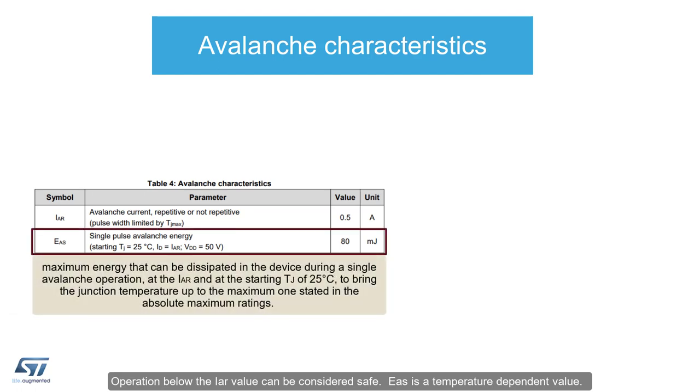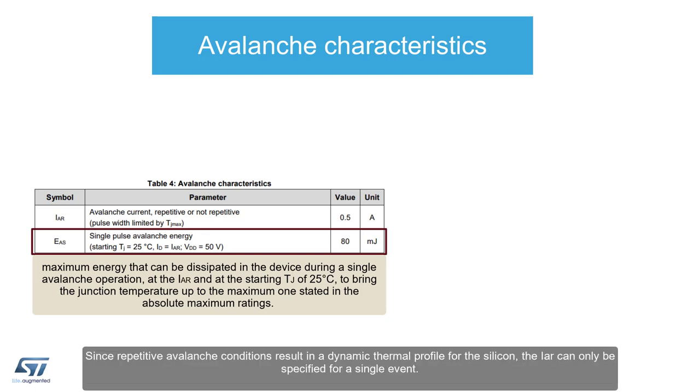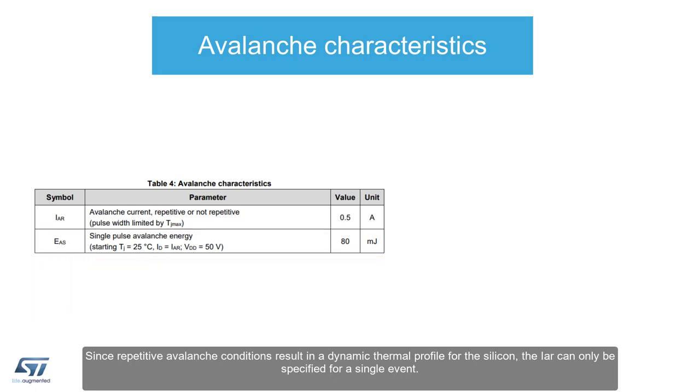EAS is a temperature-dependent value. It is defined by the maximum amount of energy that can be dissipated in the MOSFET during avalanche without exceeding the maximum rated junction temperature. In most cases, the starting reference temperature of the die is 25C. So, should avalanche occur at different operating temperature, this value will change. Often there is a graph of avalanche energy versus junction temperature to assist with this calculation. Since repetitive avalanche conditions result in a dynamic thermal profile for the silicon, the IAR can only be specified for a single event.